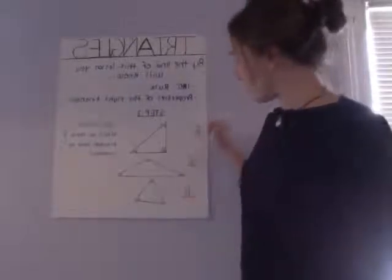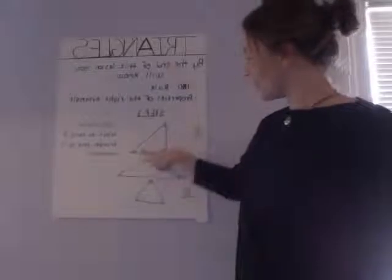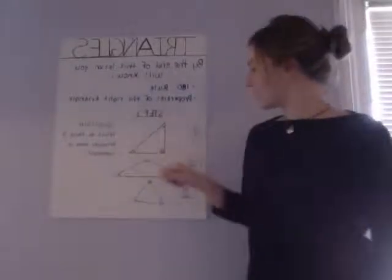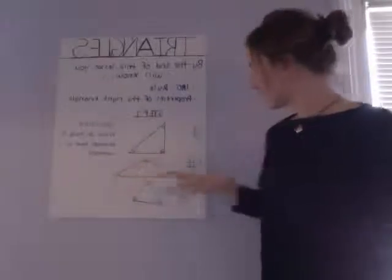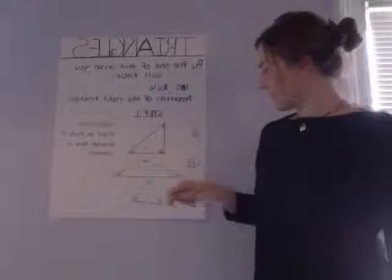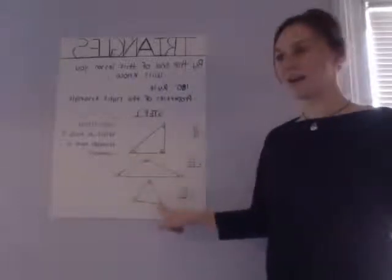As you can see, I have drawn out three different triangles. The first one has two 45 degree angles and a 90 degree angle. The second one has a 110 degree angle, a 30 degree angle, and a 40 degree angle. And the last one has an 80 degree angle, a 70 degree angle, and a 30 degree angle.